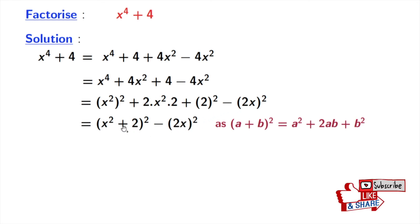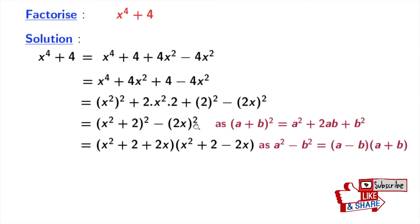Again look that this is in the form of a square minus b square, where a is x square plus 2 and b is 2x. So we get x square plus 2 plus 2x times x square plus 2 minus 2x.